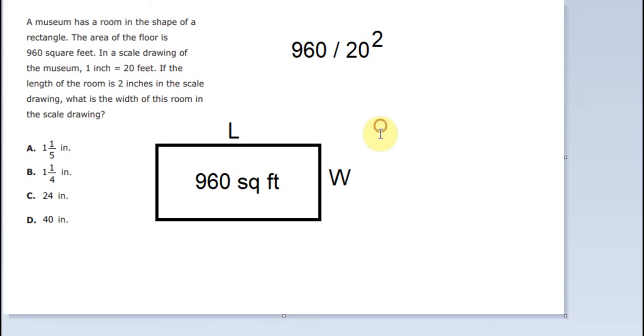Why do we have the power 2? Because we have the length and the width. They multiply together, so we have 2 units of feet that multiply together. That's why when we convert to inches, we need to divide by 20, then divide by another 20. That's why we got 20 to the power of 2.